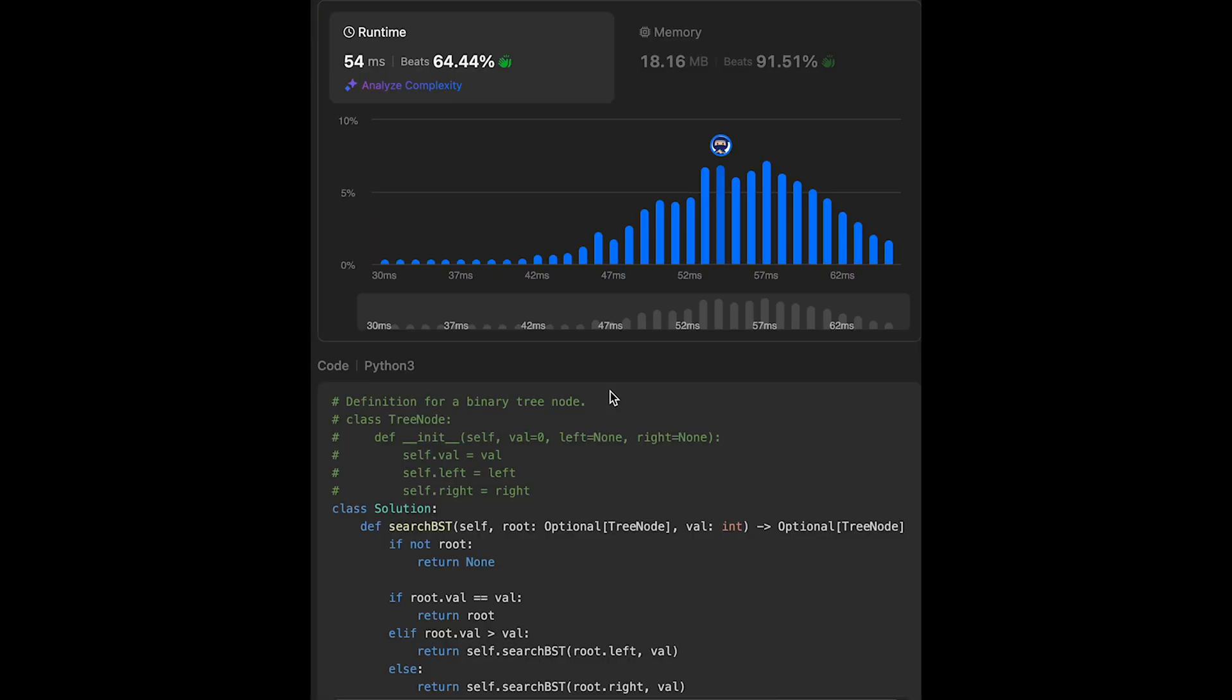And the time complexity of this solution should be... This is a typical binary search tree. So the best case is order of log n. And in the worst case, we have like an unbalanced tree, I mean a skewed tree. So in that case, in the worst case, time complexity should be order of n, where n is the number of nodes in the tree.